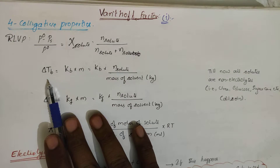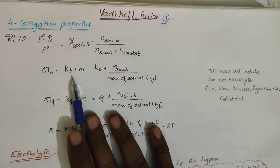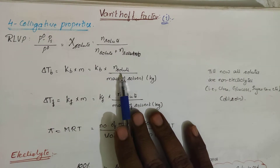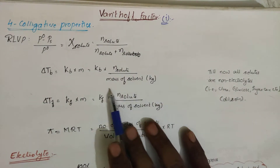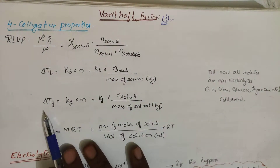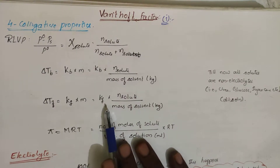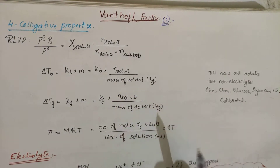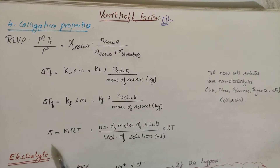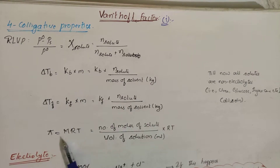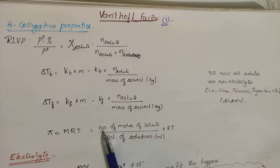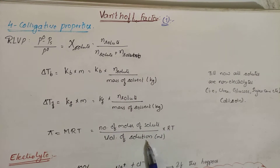Next, ΔTb is elevation in boiling point, equal to Kb × m, where Kb is the ebullioscopic constant and m is molality — number of moles of solute by mass of solvent in kg. Similarly, depression in freezing point is Kf × m. Osmotic pressure π = MRT, where M is concentration: moles of solute by volume of solution, multiplied by RT.